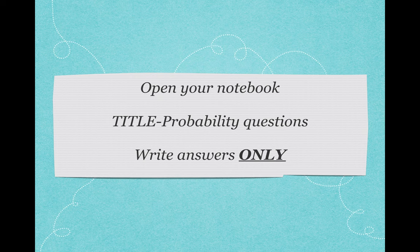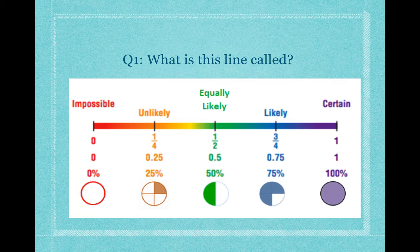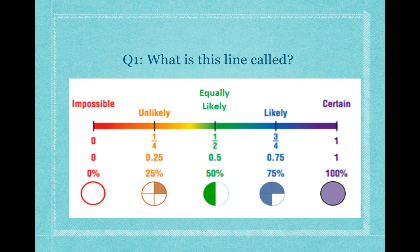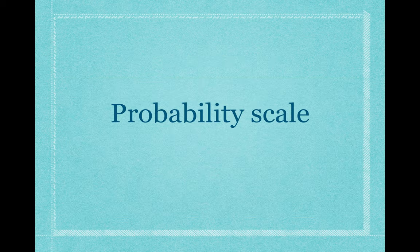Hopefully you had a bit of a break. Now we are going to look at a few more questions before we finish this lesson. Keep your notebooks open. Let's see if you can remember this — what is this line called? Write down in your notebook what you think this line is called. It's called a probability scale or line. You can say 'probability line' or 'probability scale' — two possible answers.